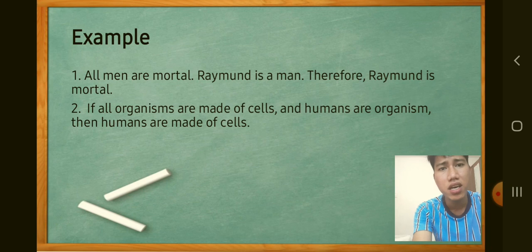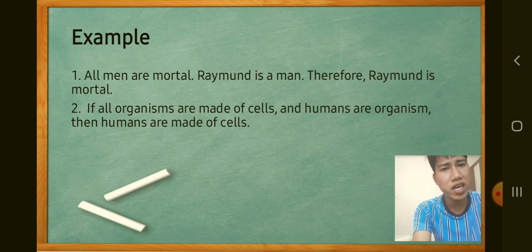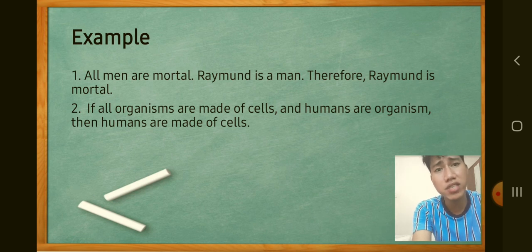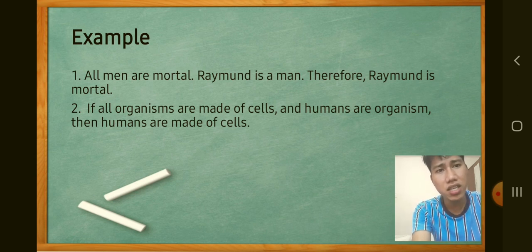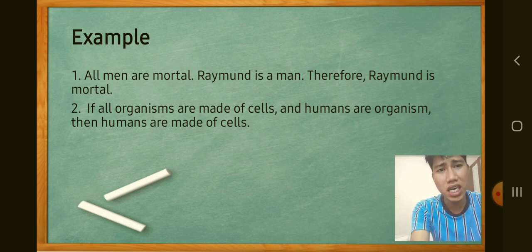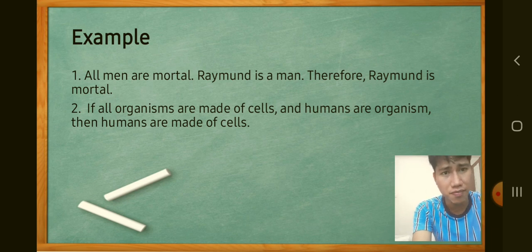Example of deductive reasoning: All men are mortal — this is the general statement. Raymond is a man. Therefore, Raymond is mortal. Second example: if all organisms are made of cells and humans are organisms, then humans are made of cells. We start with the general premise and move to the specific conclusion.